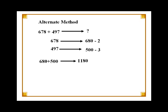So you add 680 and 500 to get 1180, and then you subtract 5 from it. You will get 1175, which is the right answer. The rule for deciding which method to use depends on the numbers you are adding or your own personal preference.